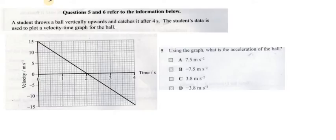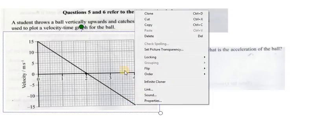Question number 5 and 6 refer to the information below. A student throws a ball vertically upward and catches it after 4 seconds. The student's data is used to plot a velocity time graph for the ball. This is velocity time graph. The initial velocity of the ball is 15 and the ball is going up. This is the point where the ball reaches at the maximum height where the velocity is zero. Now the ball is coming down with the opposite velocity and you catch it after 4 seconds here.